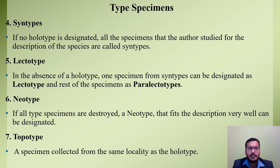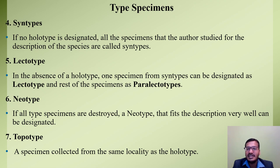The fourth type is syntypes: if no holotype is designated, all specimens that the author studied for the description of the species are called syntypes. In our example, if the scientist did not designate any specimen as holotype, then all 10 specimens become syntypes. The next types are lectotype and paralectotype: in the absence of a holotype, one specimen from the syntypes can be designated as lectotype, and the rest become paralectotypes.